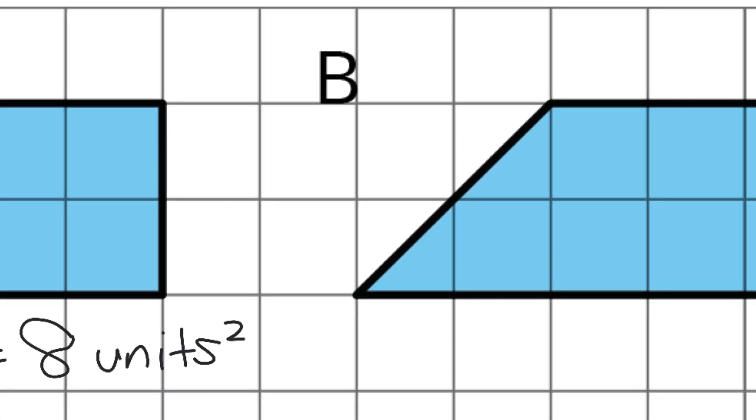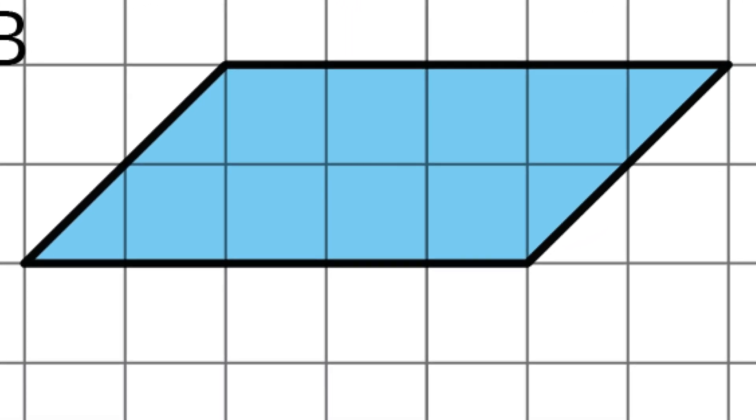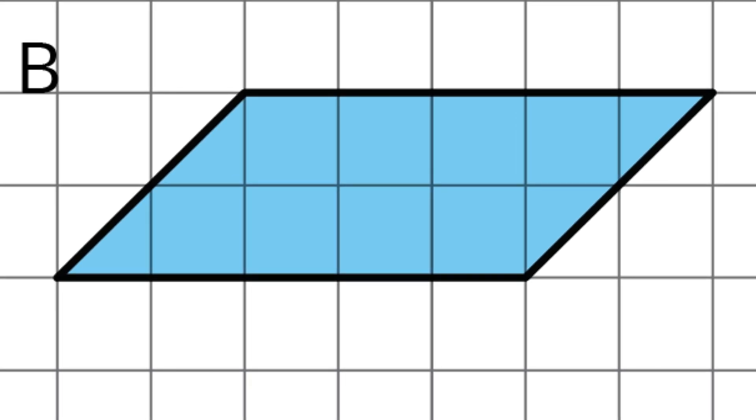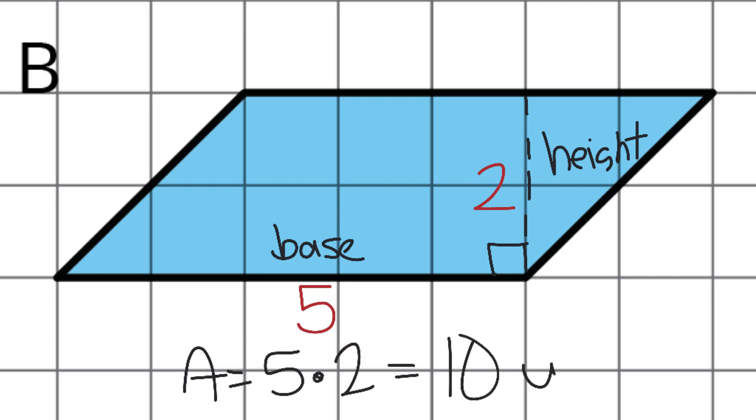Let's go to B. Let's label our base and our height. Let's call this side our base. Let's bring our height in here, and label this our height. Our base and our height meet at that right angle, and our numbers for that 1, 2, 3, 4, 5 for our base, 2 for our height. So our area will equal 5 times 2, which is 10 square units.